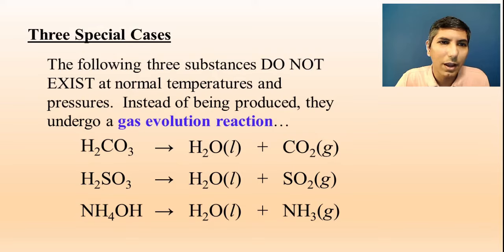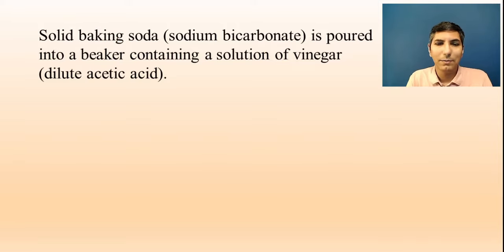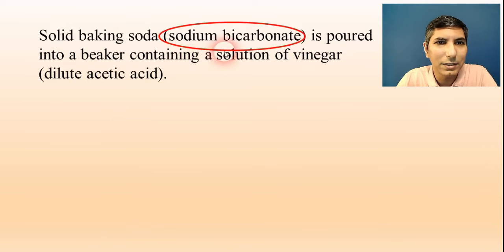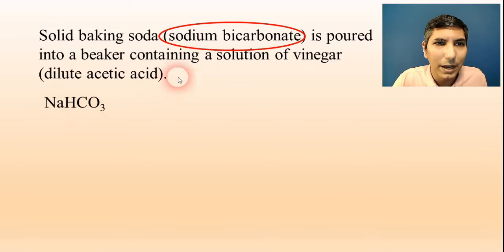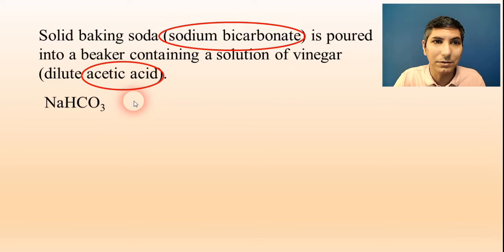Let's try a couple of examples with these. The first one is one you've probably seen before: solid baking soda, sodium bicarbonate, is poured into a beaker containing a solution of vinegar, dilute acetic acid. The solid baking soda is NaHCO₃. Notice that this is not in solution, so we don't ionize it — ionic compounds are only ionized when dissolved in water. The vinegar, acetic acid, is a weak acid, and weak acids are not ionized to any appreciable amount. So we just write it as its formula: HC₂H₃O₂.